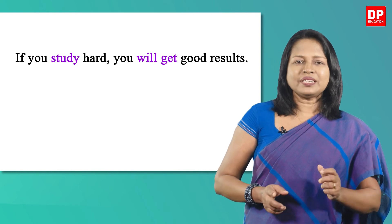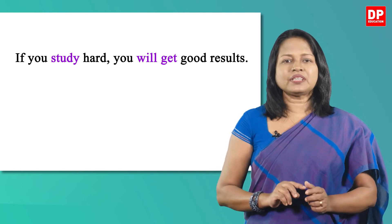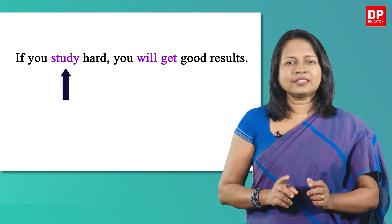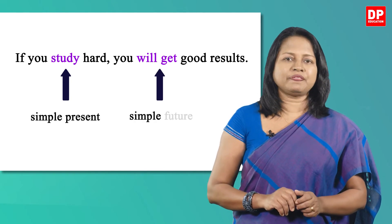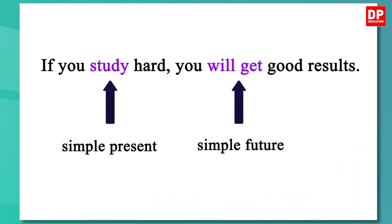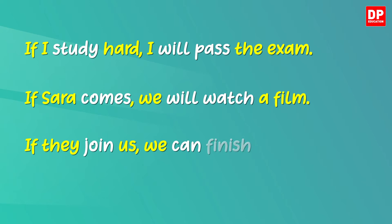Now let's see how a type 1 conditional sentence is written. The verb of the conditional clause — 'study' — is in simple present tense. The verb in the result clause — 'will get' — is in simple future tense. Here are some more examples: 'If I study hard, I will pass the exam.' 'If Sarah comes, we will watch a film.' 'If they join us, we can finish the work soon.' In the third sentence, instead of 'will', we use 'can', which also shows a future action here.